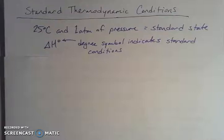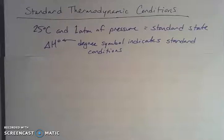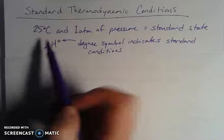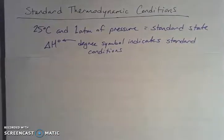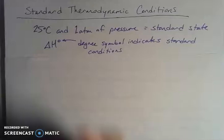Today I want to talk about standard thermodynamic conditions and how we calculate enthalpy. We're going to do a couple of problems to figure out how we get to these H and delta H values — where we find them, how we use them, and why they are important. All of that happens under standard thermodynamic conditions, which are at 25 degrees Celsius and one atmosphere of pressure. That's the standard state in a thermodynamic context.